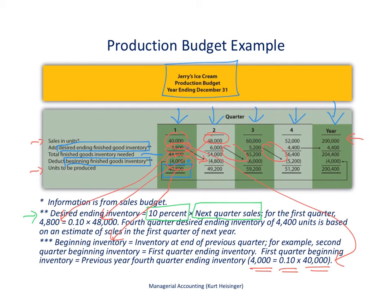That's one of the common problem areas — students often wonder where that beginning inventory number comes from. Take a close look at that third footnote and you'll see where the first quarter beginning finished goods inventory comes from.